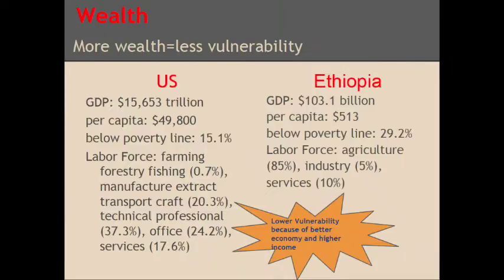Wealth is an important aspect in assessing vulnerability because of its direct effect on access to resources. The U.S. is one of the top countries in the world in terms of economy, with 15.1 percent of the population living below the poverty line. In Ethiopia, 29.2 percent of the total population live below the poverty line, and there are fewer job varieties, with agriculture accounting for 85 percent of all jobs. The U.S. is therefore less vulnerable to drought because people in America have enough money to purchase the resources they need to withstand the drought.